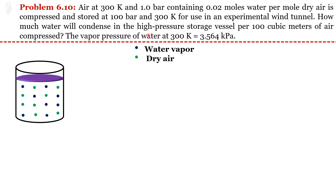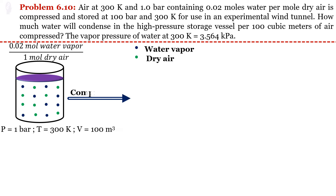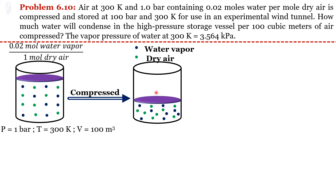We will draw the block diagram of this problem. We start with air that contains water vapor as well as dry air. At the initial state, pressure is 1 bar, temperature is 300 Kelvin, and volume is 100 cubic meters. We are then compressing this air. During compression, the volume of the air will decrease, and after compression the pressure becomes 100 bar at 300 Kelvin.